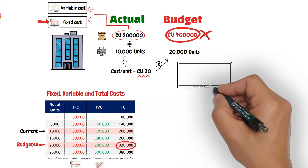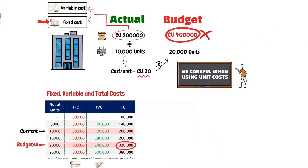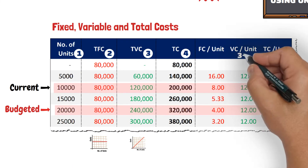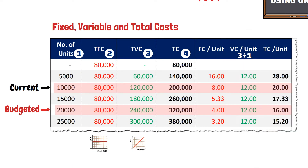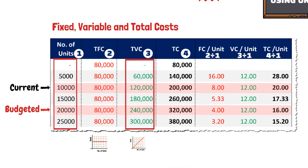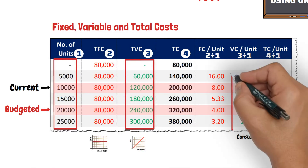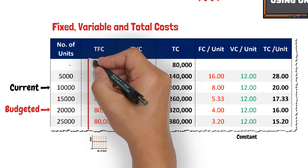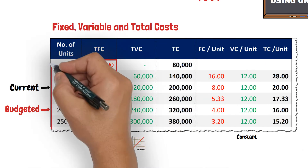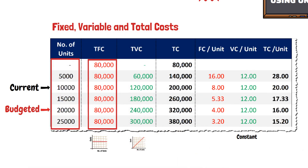So, you should be careful when using unit cost figures. This is the variable cost per unit, the fixed cost per unit, and the total cost per unit. The total variable costs change proportionately with changes in the production level, and that is why the variable cost per unit remains constant. The total fixed costs remain constant at different production levels, and that is why the fixed cost per unit decreases with the increase in the production level.